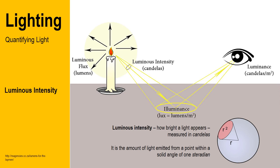Light is presumed to emanate from its source in a uniform manner, much like an expanding sphere. The measure of light is to sample the amount of light in one part of the spherical surface. The area measured is a steradian.